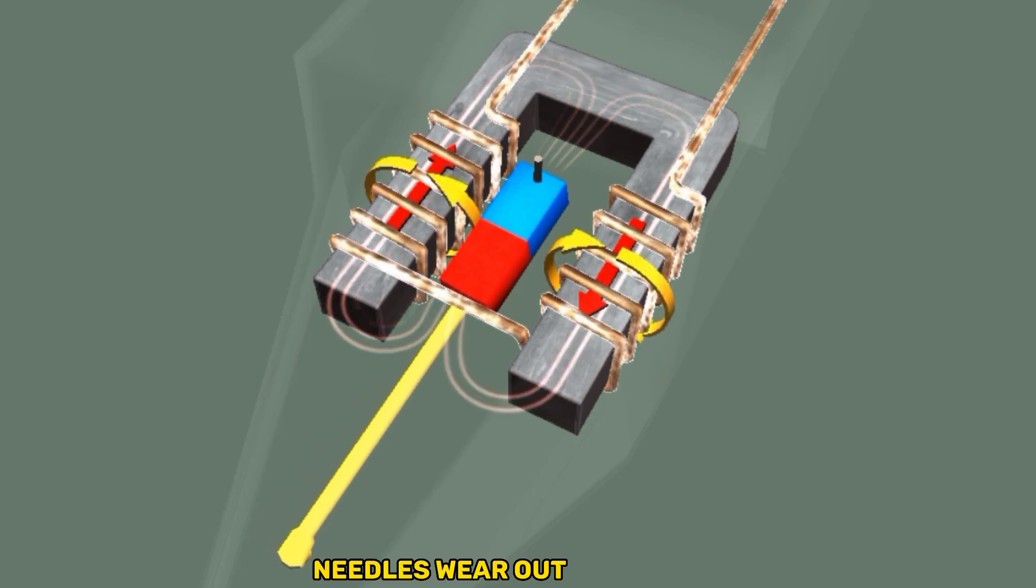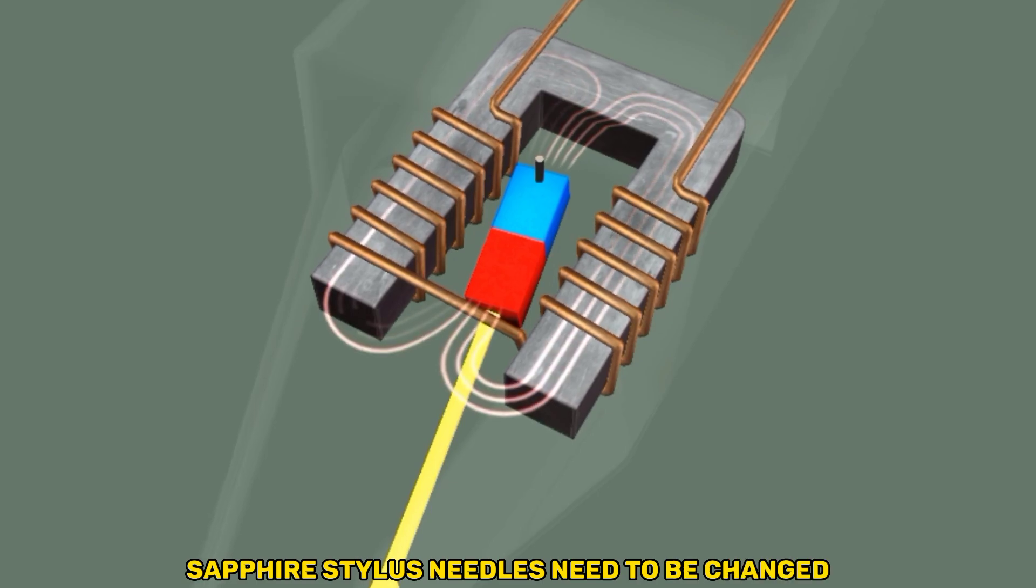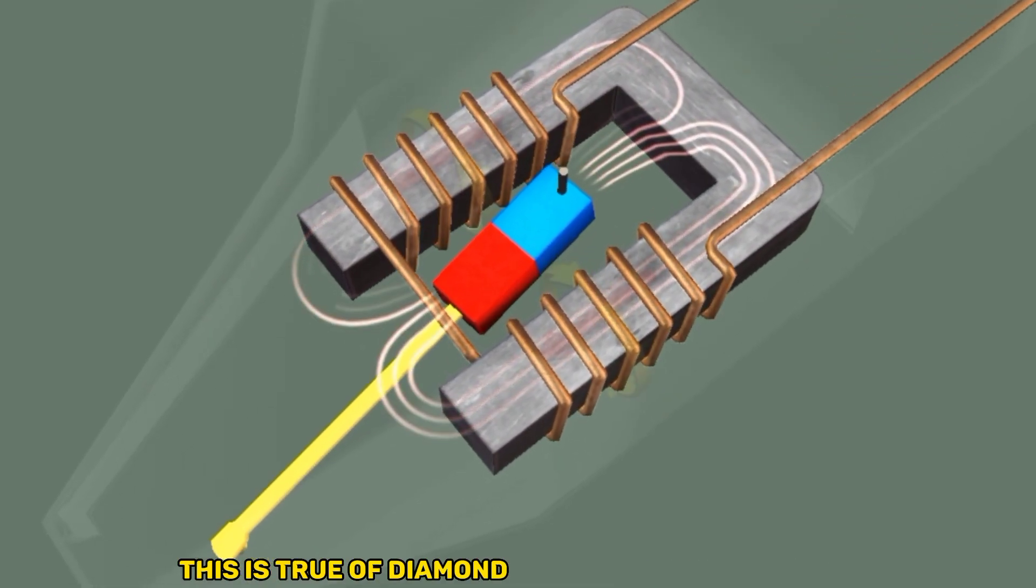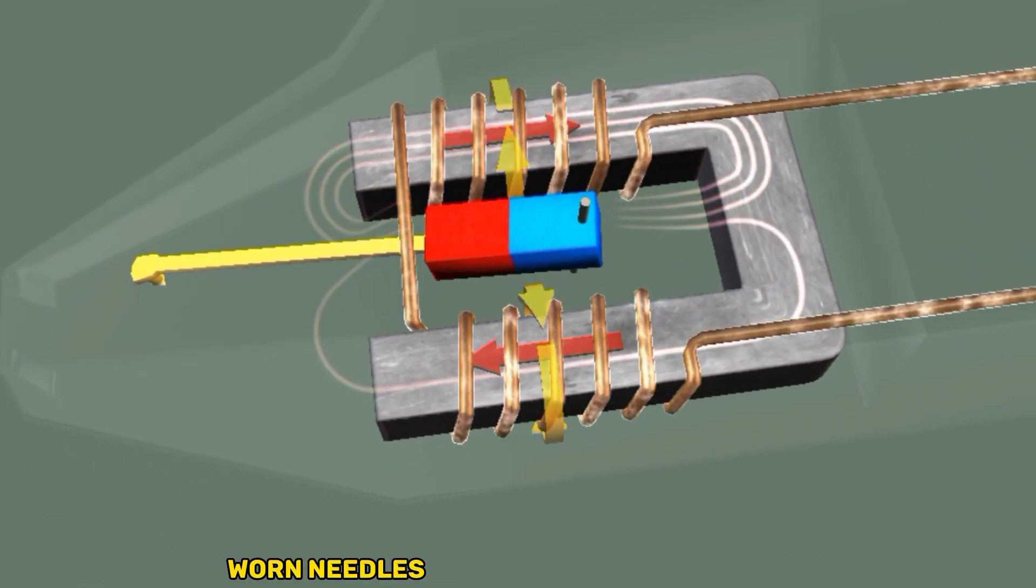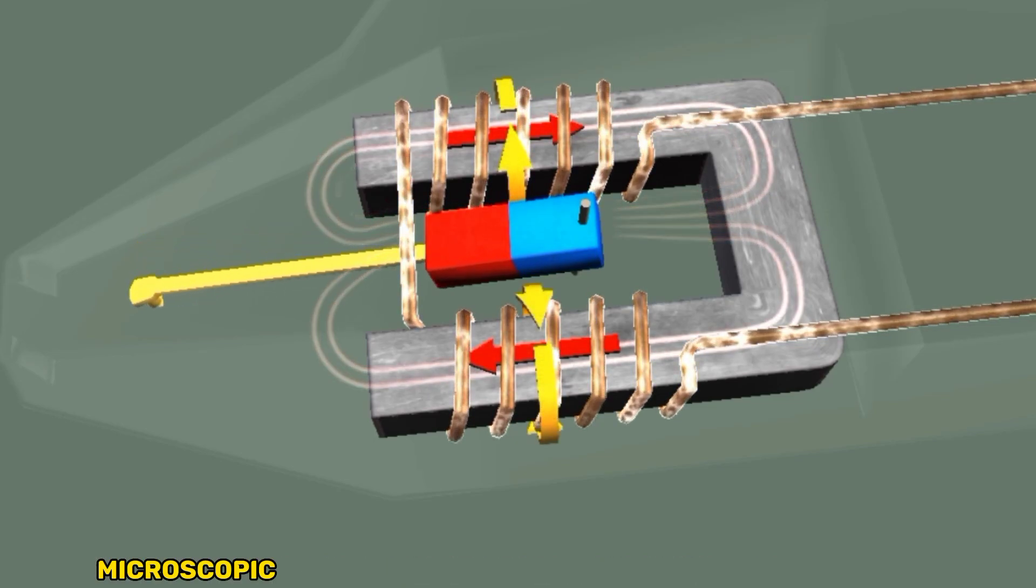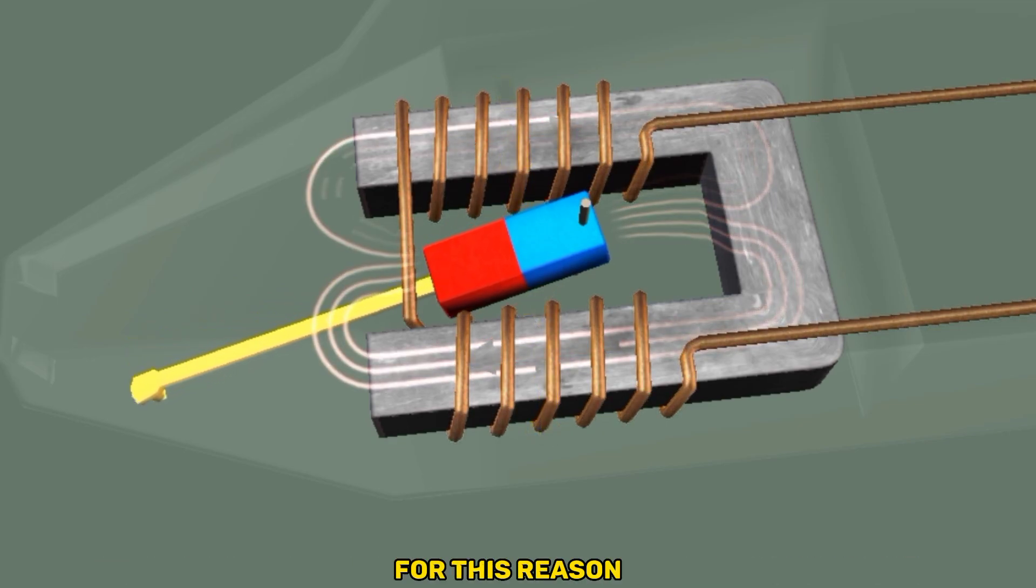Needles wear out with time. Sapphire stylus needles need to be changed after around a hundred hours of use. This is true of diamond ones after a thousand hours. Worn needles hinder playback quality and damage record grooves. Microscopic damage in the grooves may also cause noise. For this reason, vinyl records should be handled and stored properly.